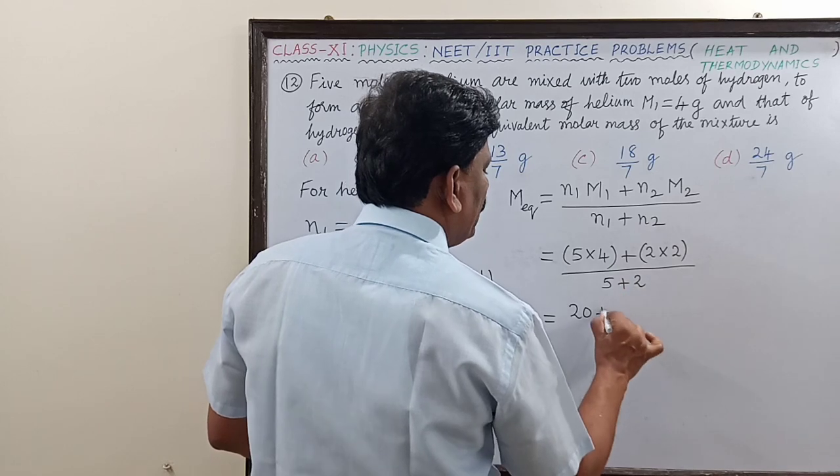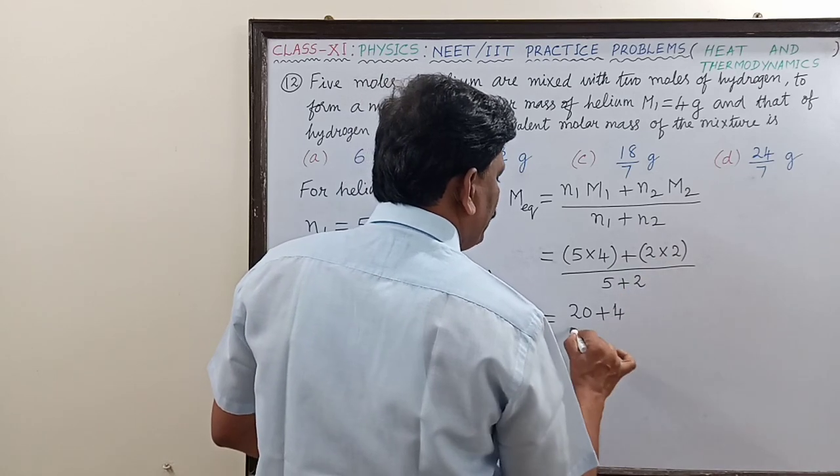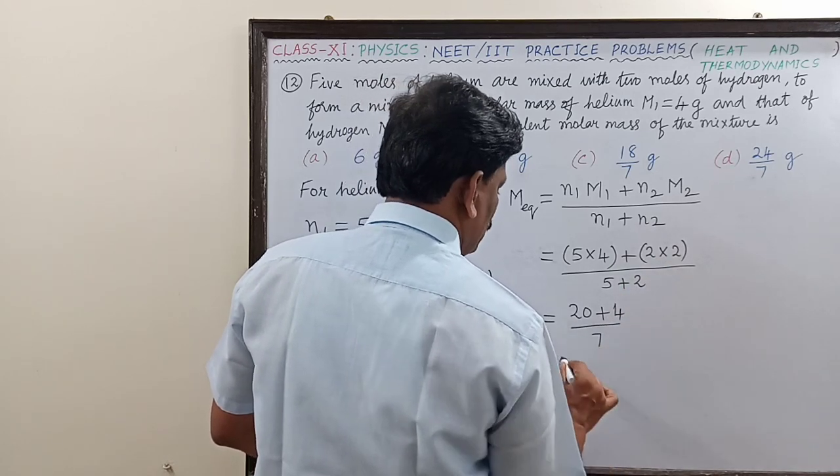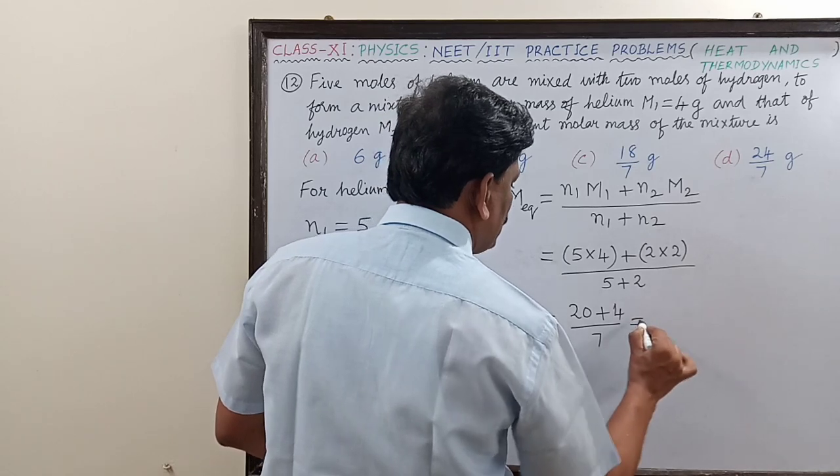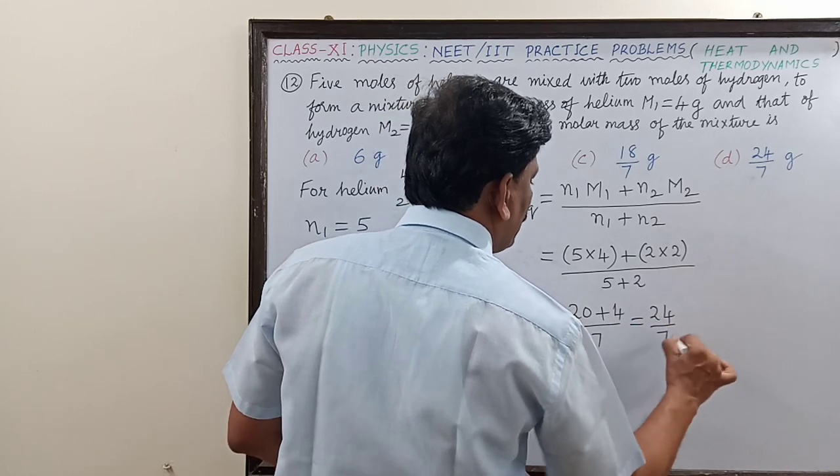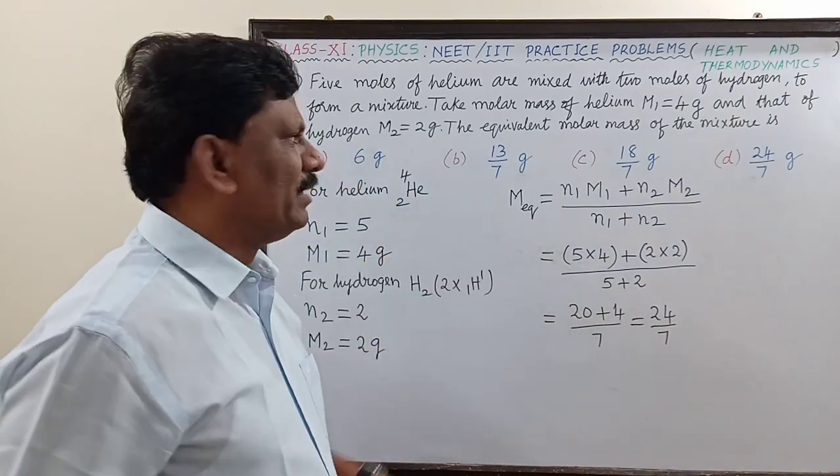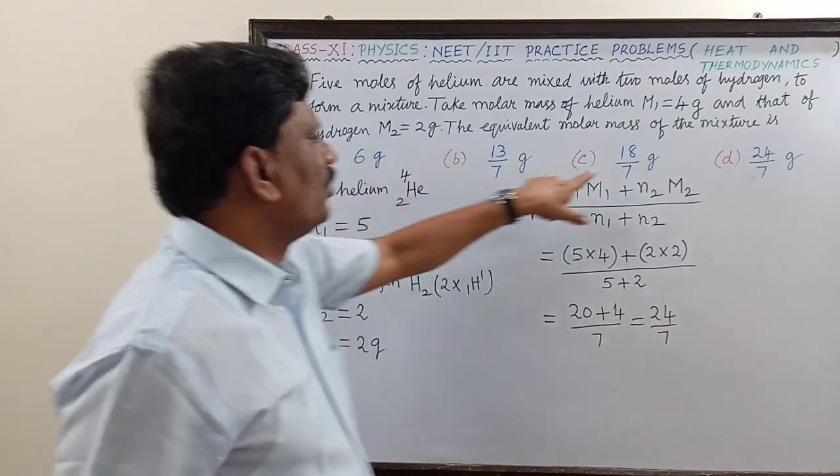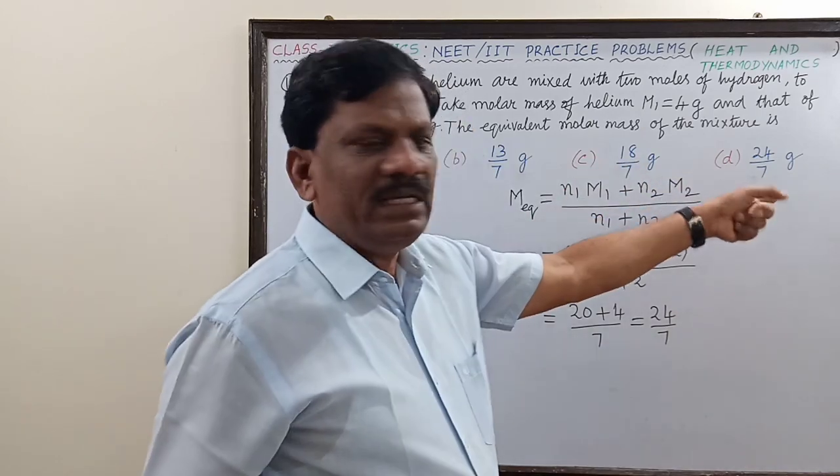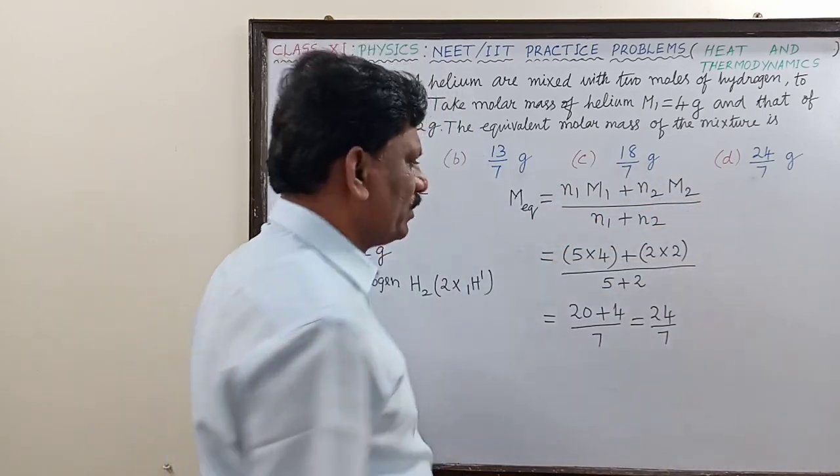This is 20 plus 4 divided by 7. So 24 divided by 7, which is the correct option. We will see option D: 24 by 7 grams. So this is 24 by 7 grams.